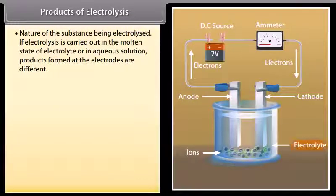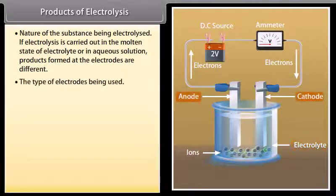Products of electrolysis depend mainly upon the following factors: Nature of the substance being electrolyzed. If electrolysis is carried out in the molten state of electrolyte or in aqueous solution, products formed at the electrodes are different. The type of electrodes being used. If the electrode used is inert, it does not take part in the reaction. If the electrode is reactive, it takes part in the electrode reaction, then the products of electrolysis would be different.